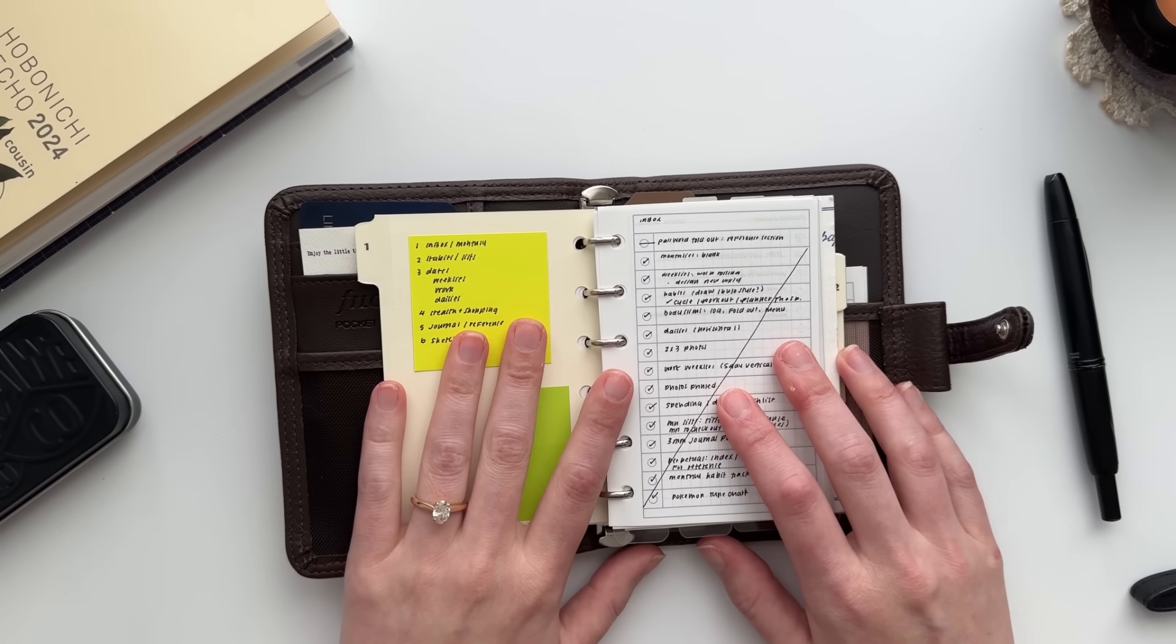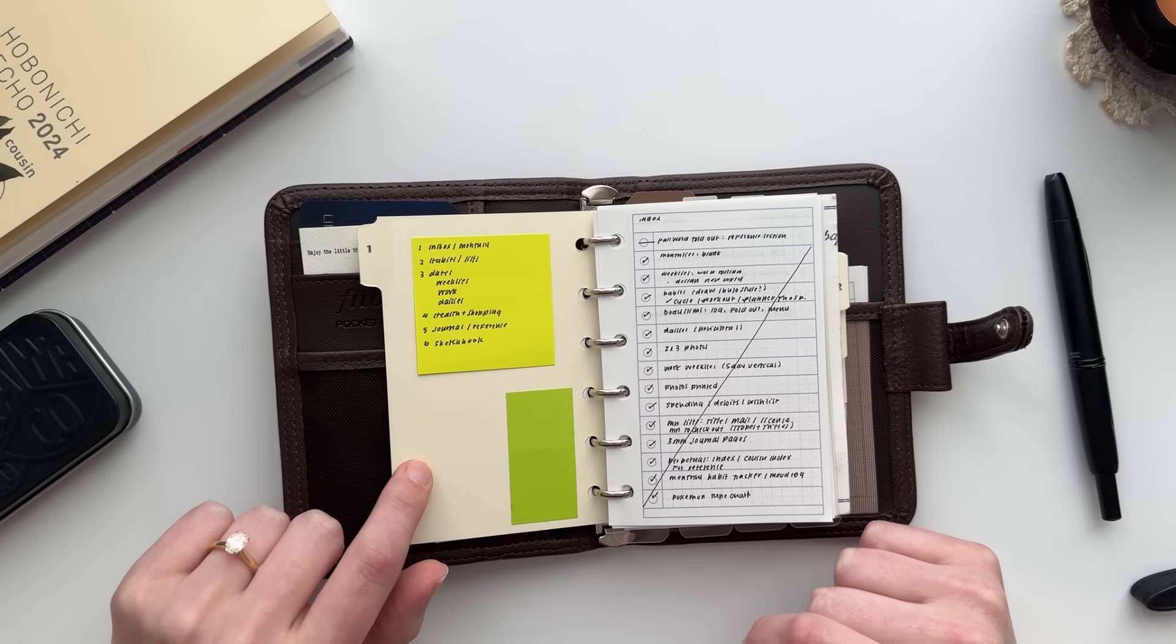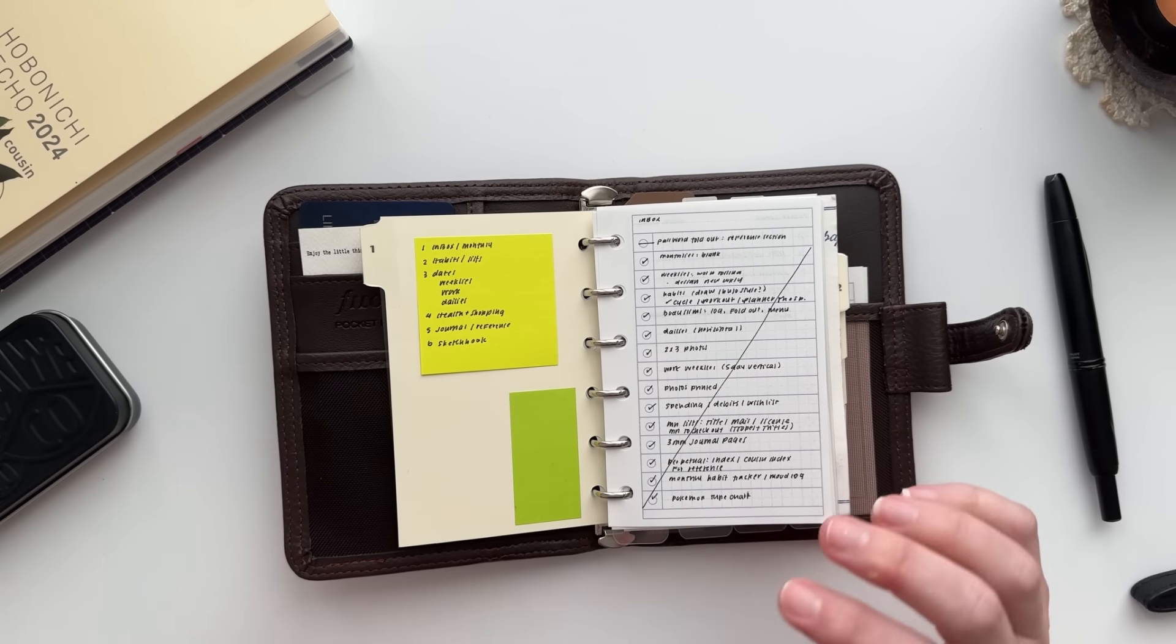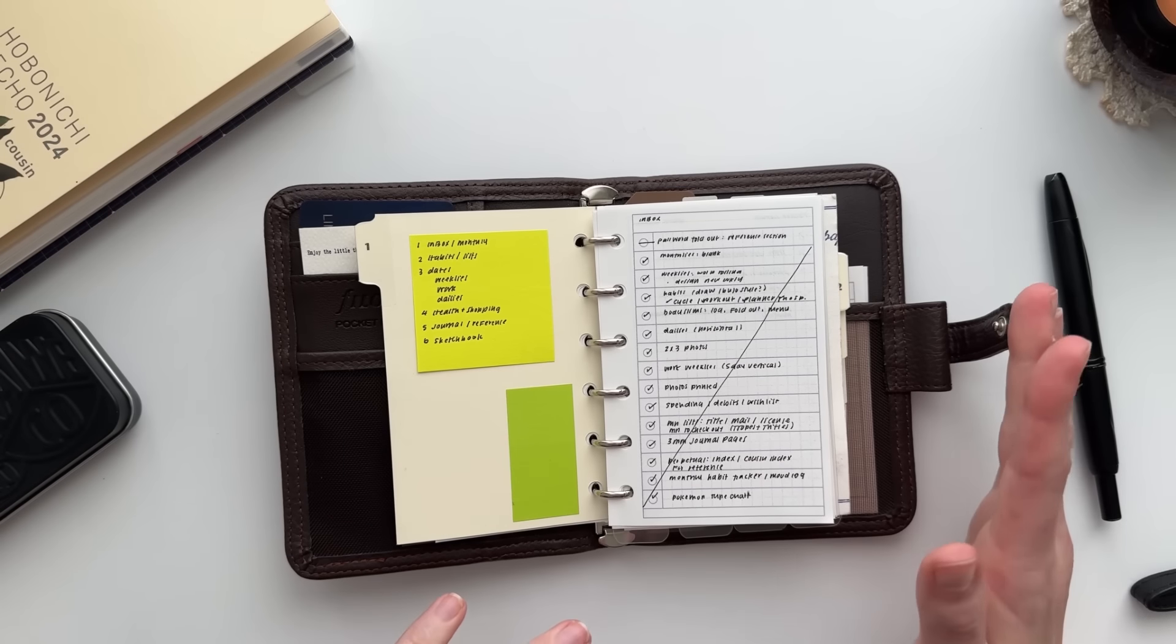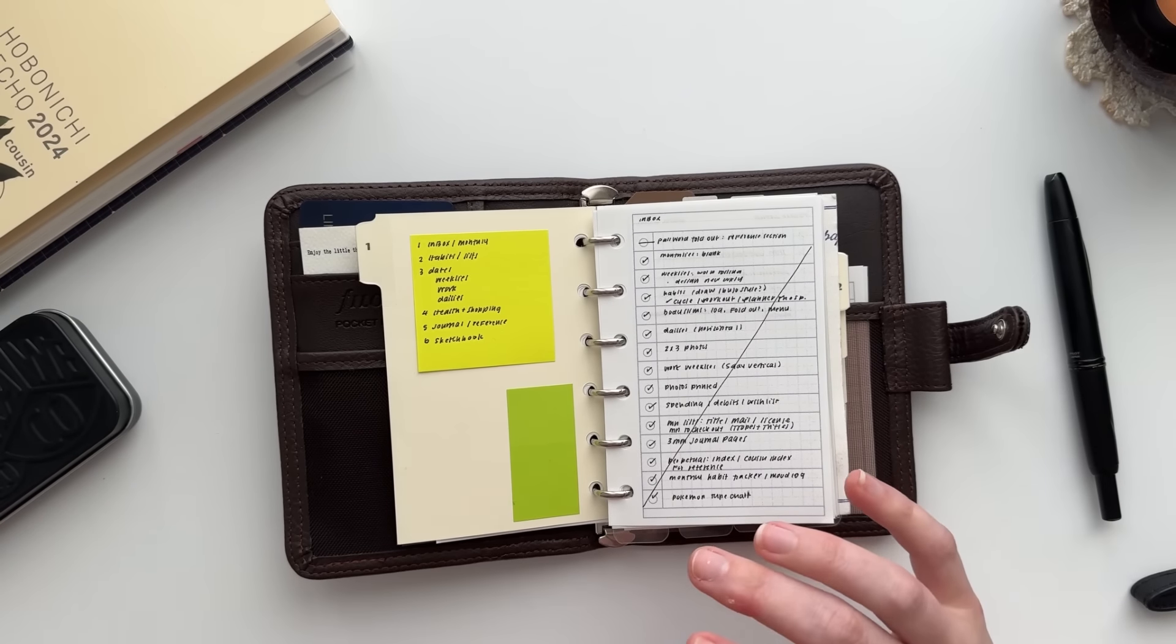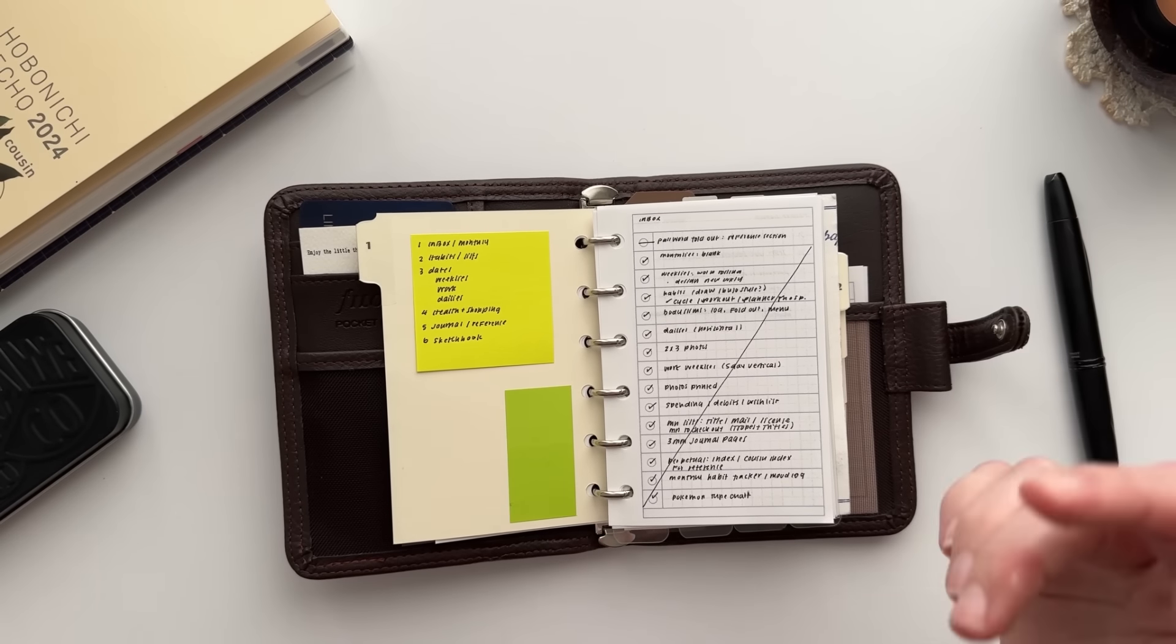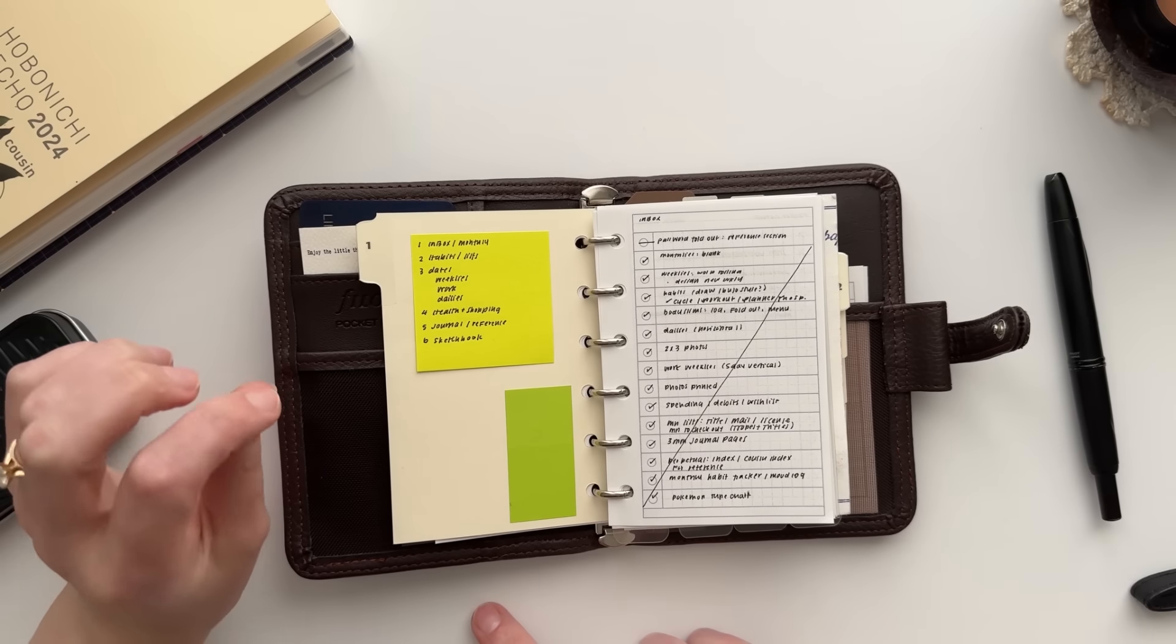My first section is my inbox and monthly. My dividers by the way are from Filofax - they just come with your standard Filofax cover nowadays. I have given myself a little bit of a key because I set this up like two days ago. Divider one is inbox and monthly. Divider two is habits, lists, and collections. Divider three is dates - that's my weeklies, my work weeklies, and my dailies. Number four is health and grocery shopping. Number five is journal and reference. Number six is supposed to be my sketchbook, but right now I've just got gaming stuff in there.